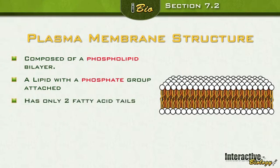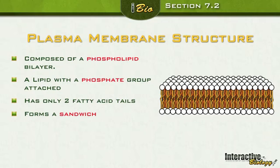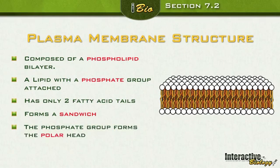The phospholipid only has two fatty acid tails, and it forms kind of like a sandwich. You have one layer at the top and one layer at the bottom, and the phosphate groups form these polar heads.